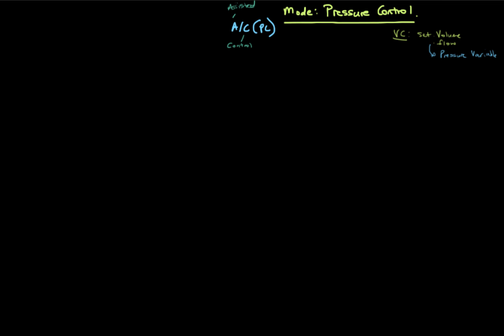In pressure control — you can probably imagine — we control the pressure. We set a pressure control and we set a time. It's similar in that we set two things: in volume control we set a volume and how fast we want it delivered; in pressure control we set a pressure change and how long we want that pressure change to be applied for. The variables that change are volume and flow, based on lung compliance — how easy the lungs are to inflate, how stiff or floppy they are.